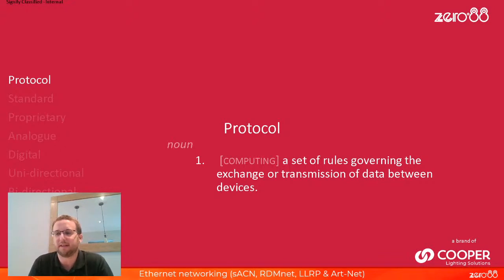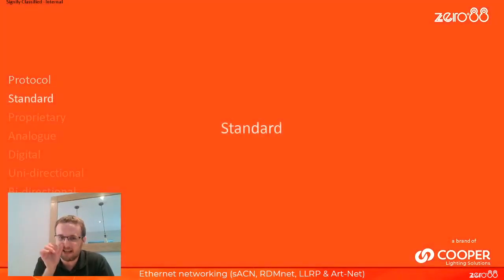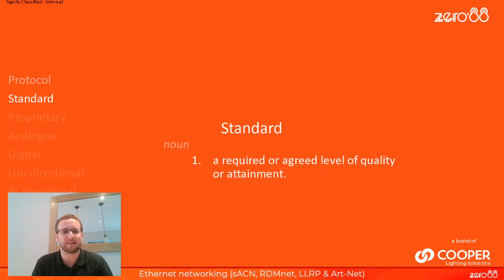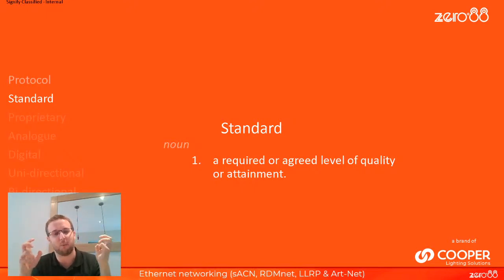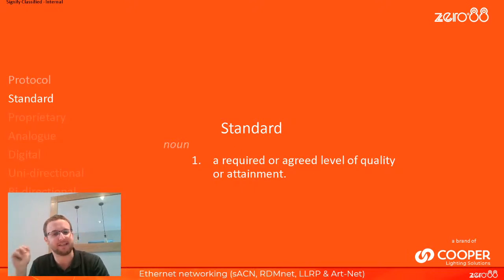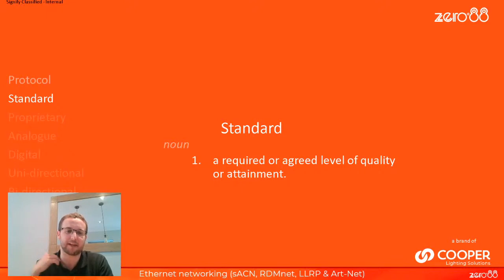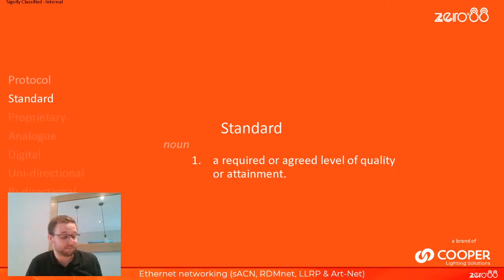If we want a console to speak to a moving light, we need to get data from the console to the moving light, and we're going to do that by using a protocol — a set of rules. Those sets of rules could be a standard. A standard means that a group of people have agreed on the required level — that's how we're going to transfer data. We're big fans of standards: DMX, RDM, Streaming ACN, RDMnet — they are all standards.